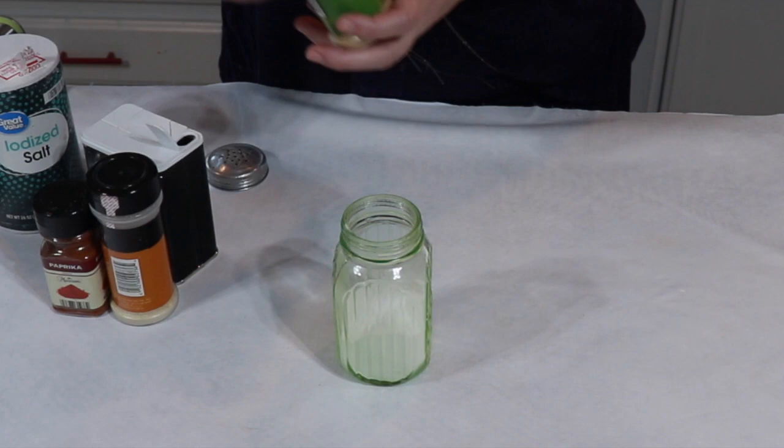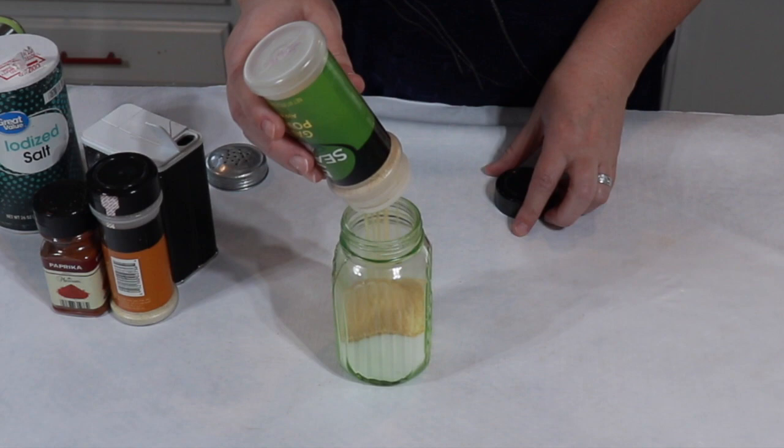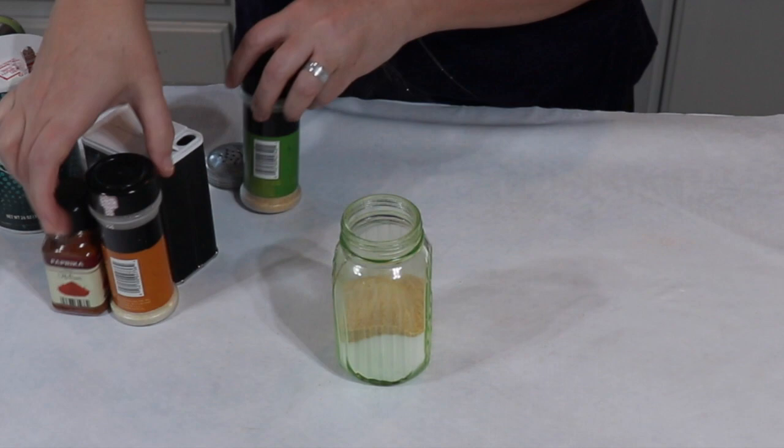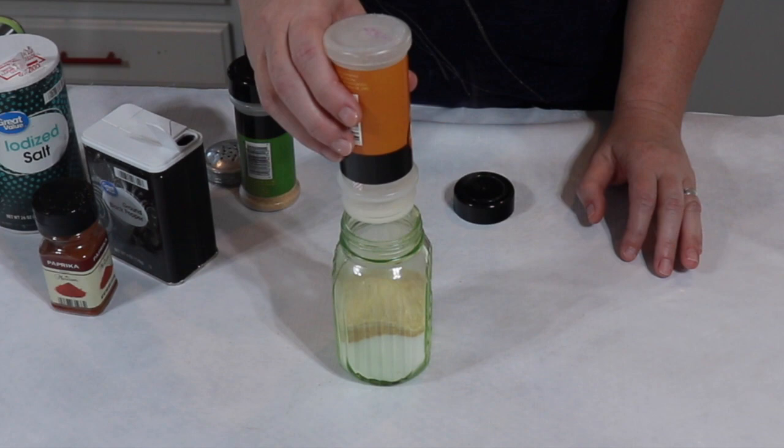But I have done this for 25 years so I just estimate. I do about a half salt and about an eighth garlic powder and an eighth onion powder, a sprinkle of pepper and a sprinkle of paprika, and then fill with salt.